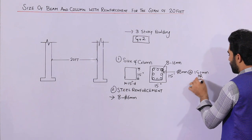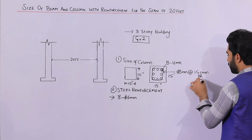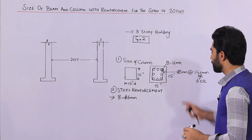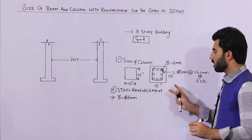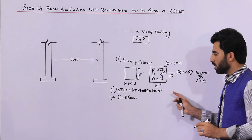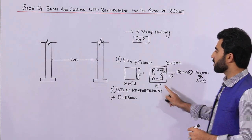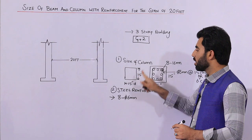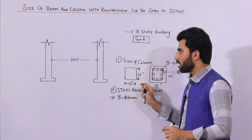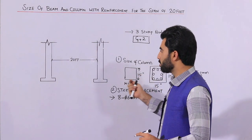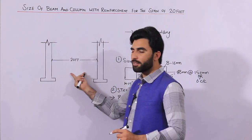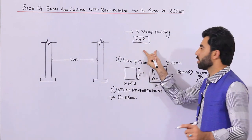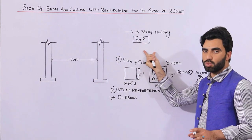For ties details, use 8 mm ties with a spacing of 150 mm, or about 6 inches center to center. These are the steel reinforcement details for a 15 by 15 inch column with a span up to 20 feet, suitable for up to 3 storey or G plus 2 construction.